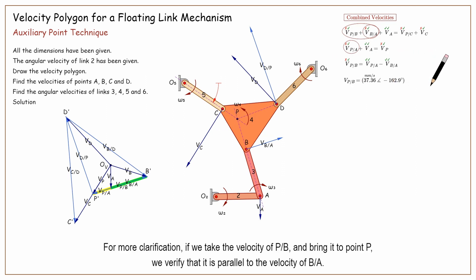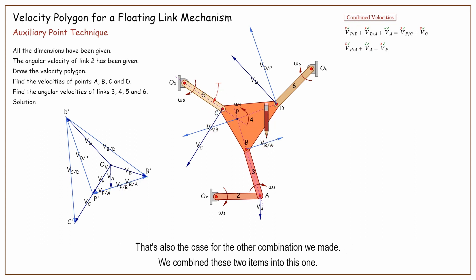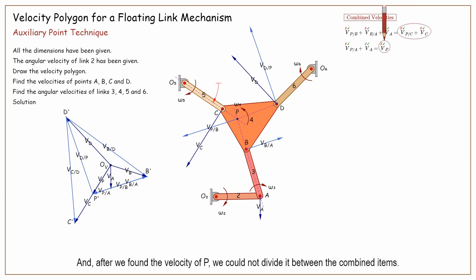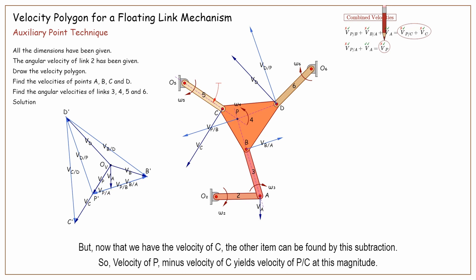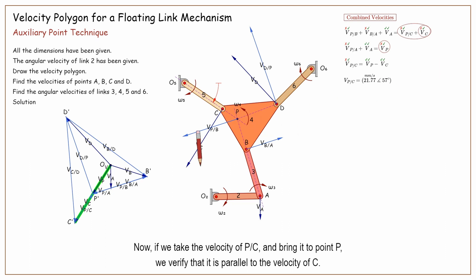For more clarification, if we take the velocity of P with respect to B and bring it to point P, we verify that it is parallel to the velocity of B with respect to A. That's also the case for the other combination we made. We combined these two items into this one. And after we found the velocity of P, we could not divide it between the combined items. But now that we have the velocity of C, the other item can be found by this subtraction: velocity of P minus velocity of C yields velocity of P with respect to C at this magnitude. Now if we take the velocity of P with respect to C and bring it to point P, we verify that it is parallel to the velocity of C.